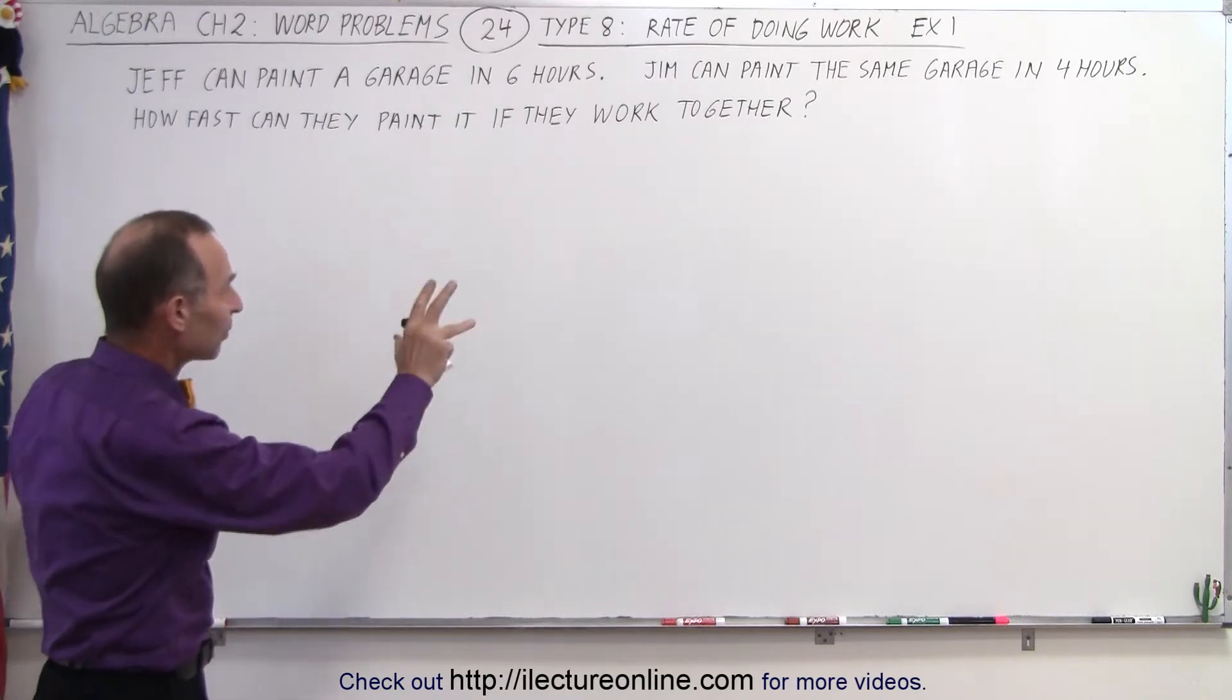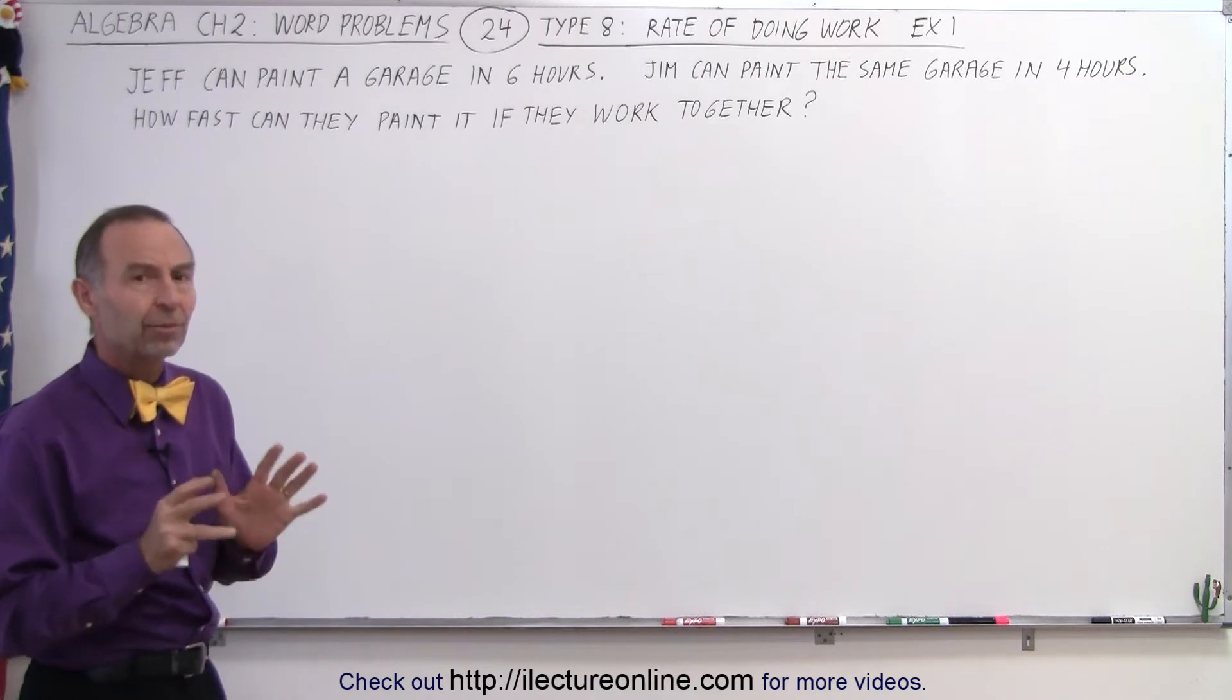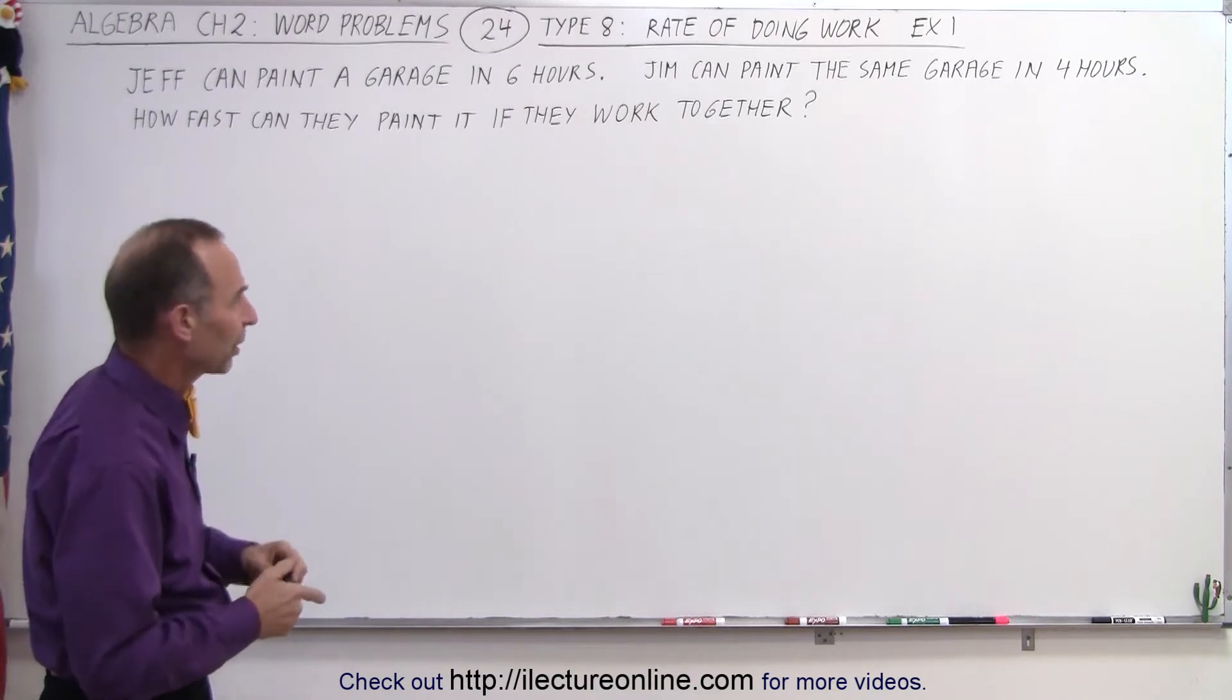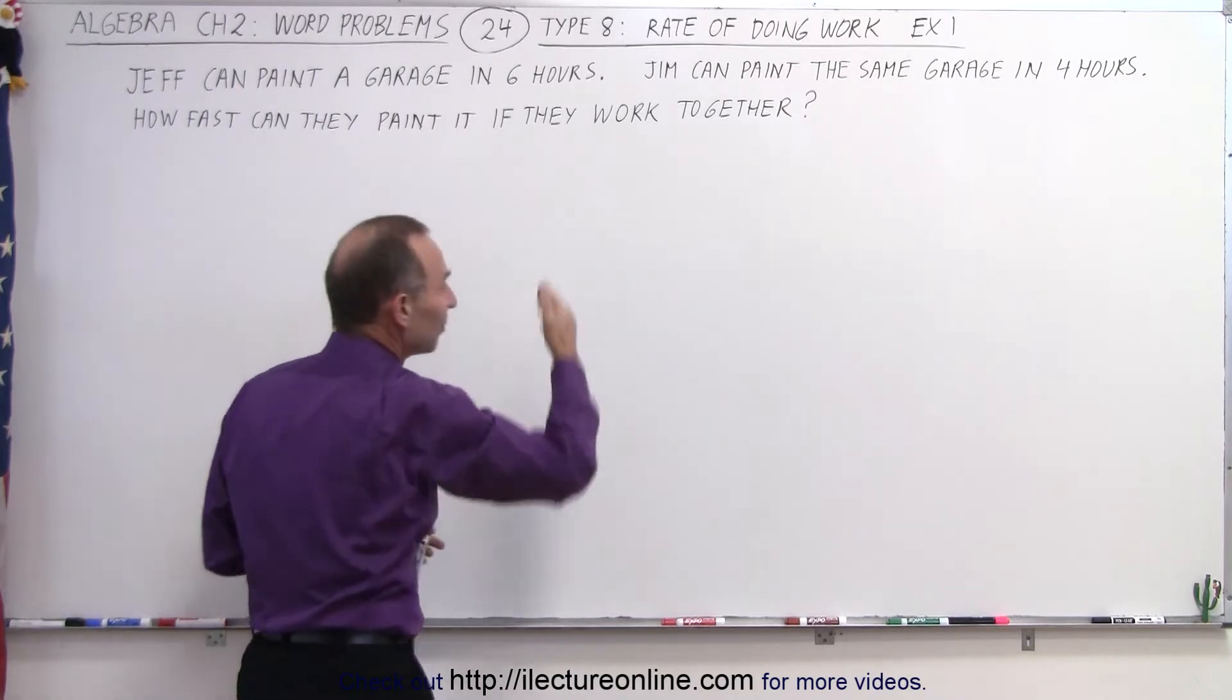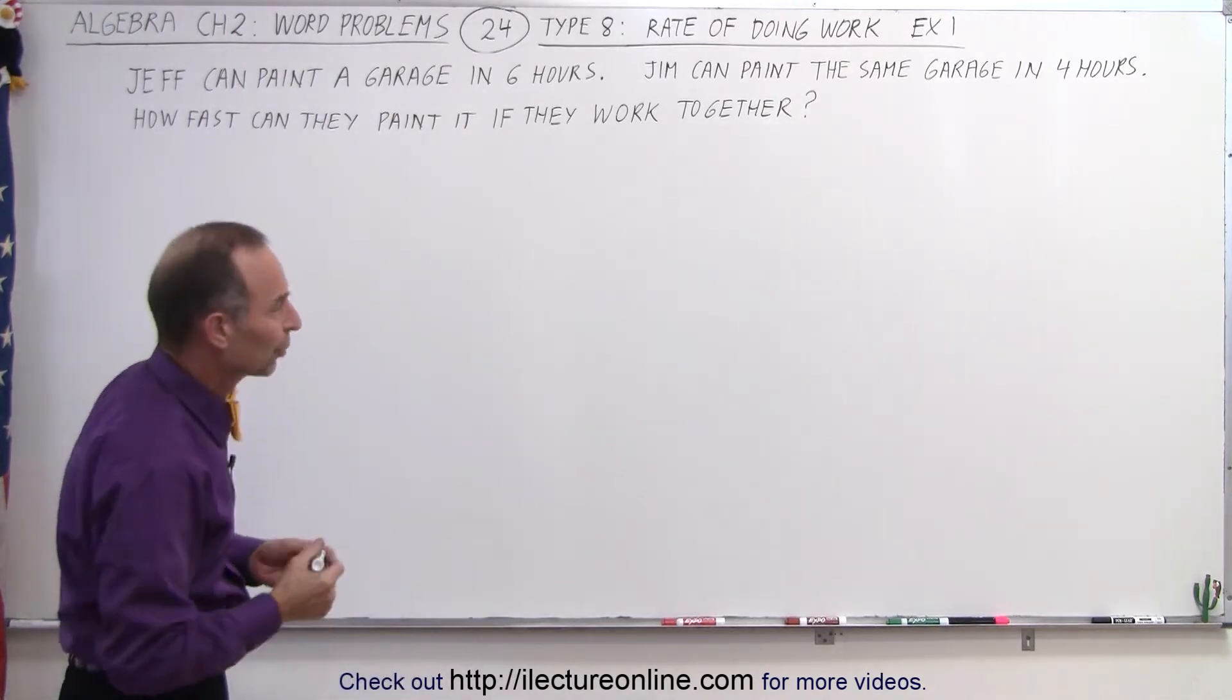Before we start solving the problem, it basically comes down to this. You have to use this particular equation. So let's say in this case there's two people. There's Jeff and there's Jim. Let's call him person number one, person number two.